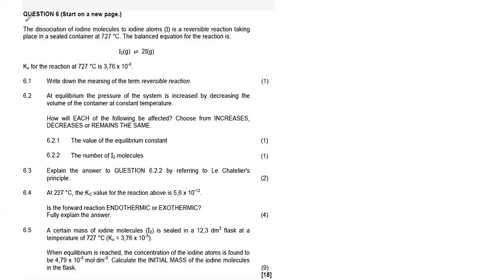Okay, so we have Question 6. It says the dissociation of iodine molecules to iodine atoms is a reversible reaction taking place in a sealed container at 727°C. The balanced equation shows I₂ molecules reacting to form iodine atoms. The Kc for the reaction at 727°C is 3.76 × 10⁻³.